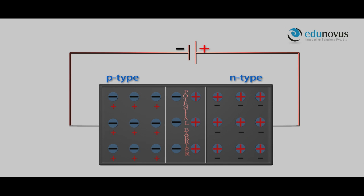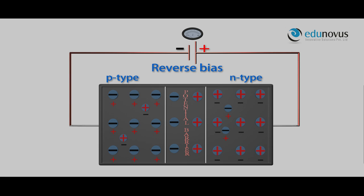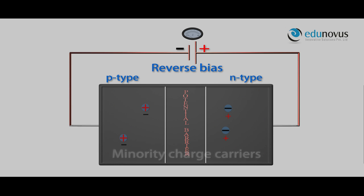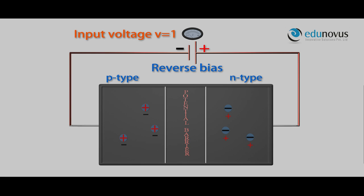Let us connect the zener diode in the reverse bias. So far, we are talking about majority charge carriers. Now, let us see the minority charge carriers. There is an extremely small concentration of electrons in P-type and holes in N-type, which are thermally generated charge carriers. As you apply the voltage, the concentration of the minority charge carriers increases due to the movement of electrons from the valence band to the conduction band.